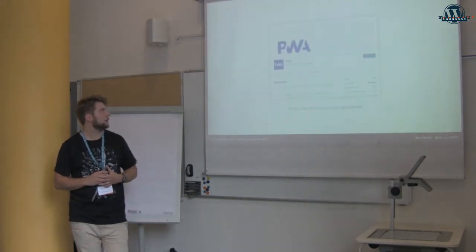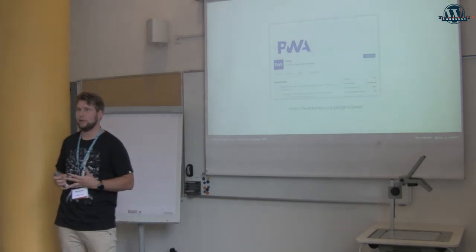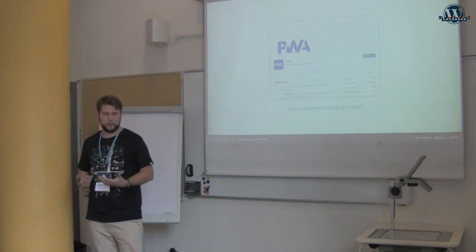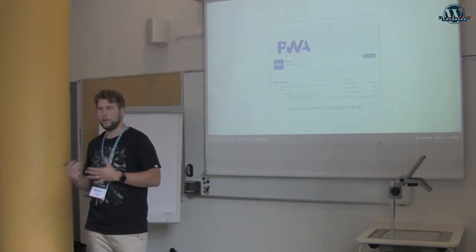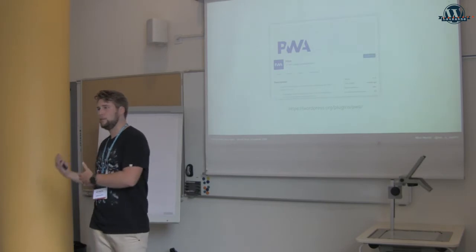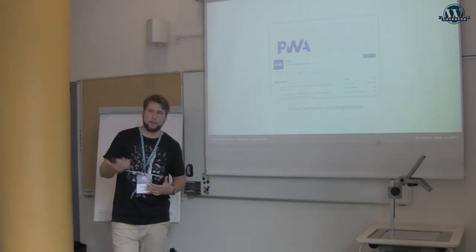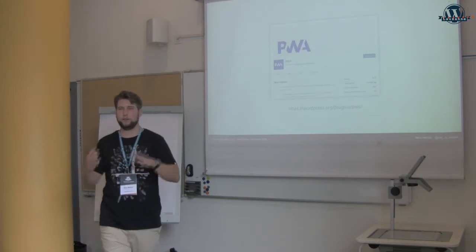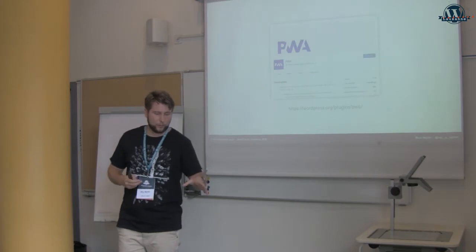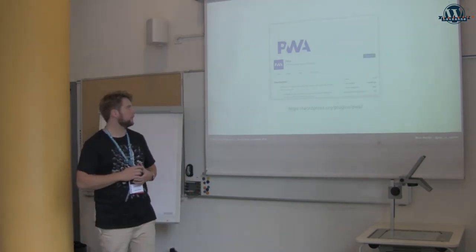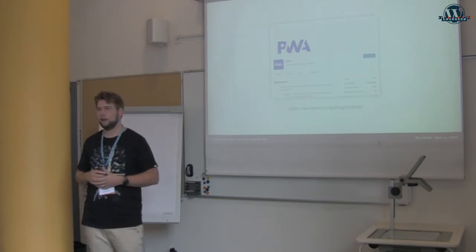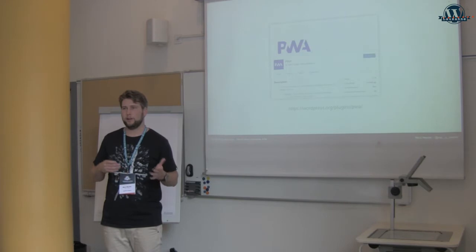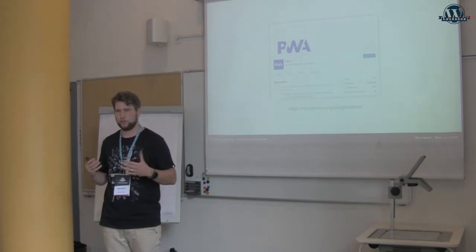Luckily, there already is a solution — a feature plugin by XWP in collaboration with Google. The idea is to bring standardized ways, standardized APIs, so we as developers can use those APIs instead of registering our own files. For the manifest file, my plugin registers a new manifest file. But if you have that plugin in core, I can just hook into that API and add my values to the already existing manifest file. I was able to contribute to the discussion from the very beginning, and I already did some commits to the code. As far as I know, WordPress is the only CMS at the moment that is working on a progressive web app solution for the core.